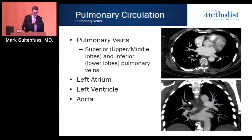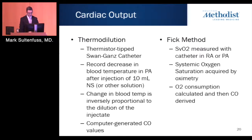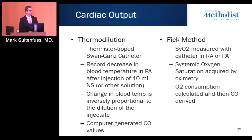To complete the circuit: pulmonary blood returns through the pulmonary veins into the left atrium, left ventricle, then the aorta. Cardiac output can be calculated two ways for determining pulmonary vascular resistance: a thermodilution model, where saline is injected and temperature changes are detected; and the Fick method, which is based on oxygen consumption.